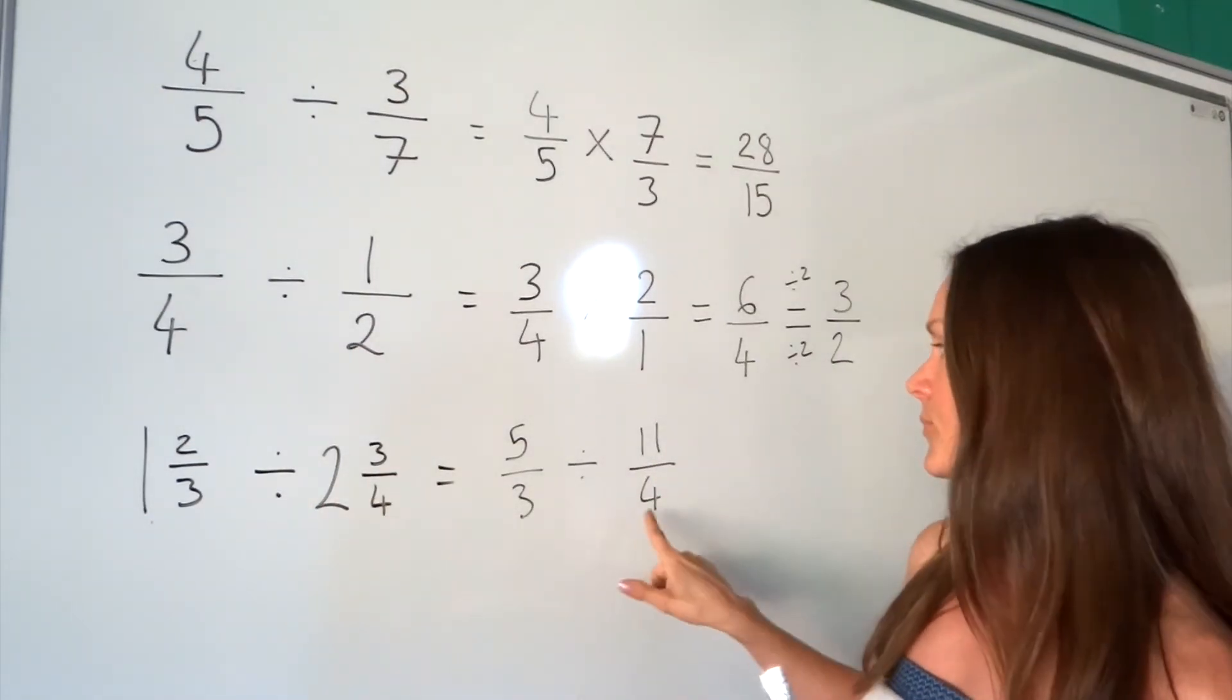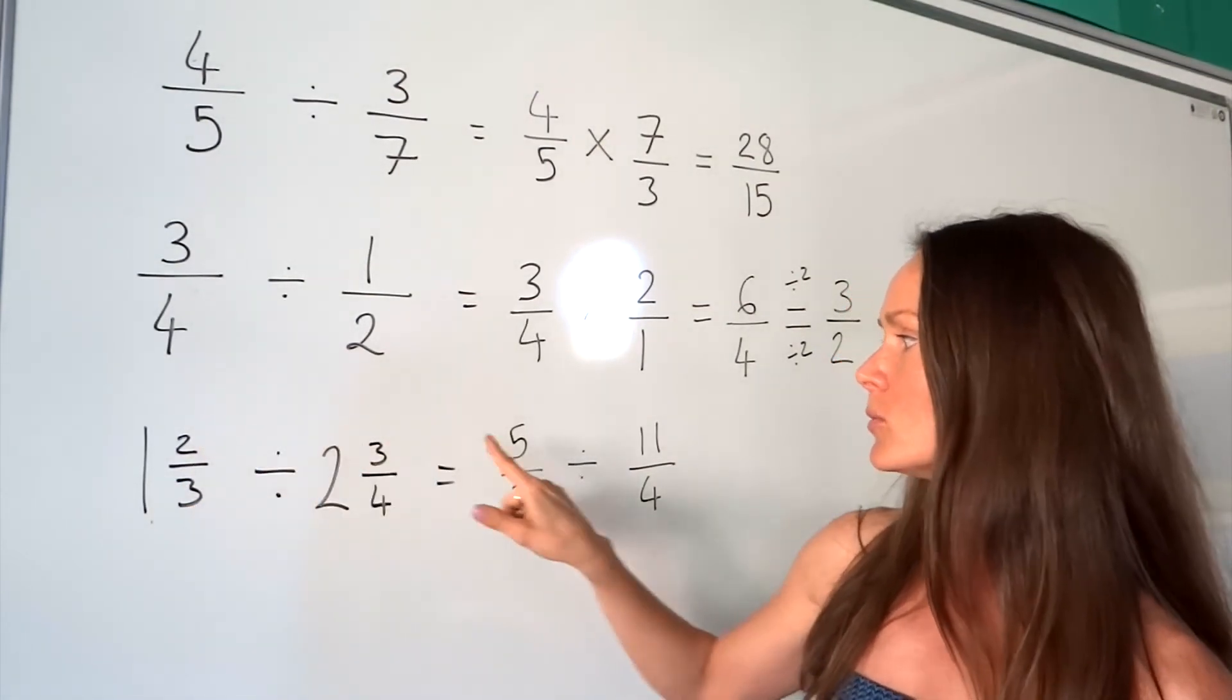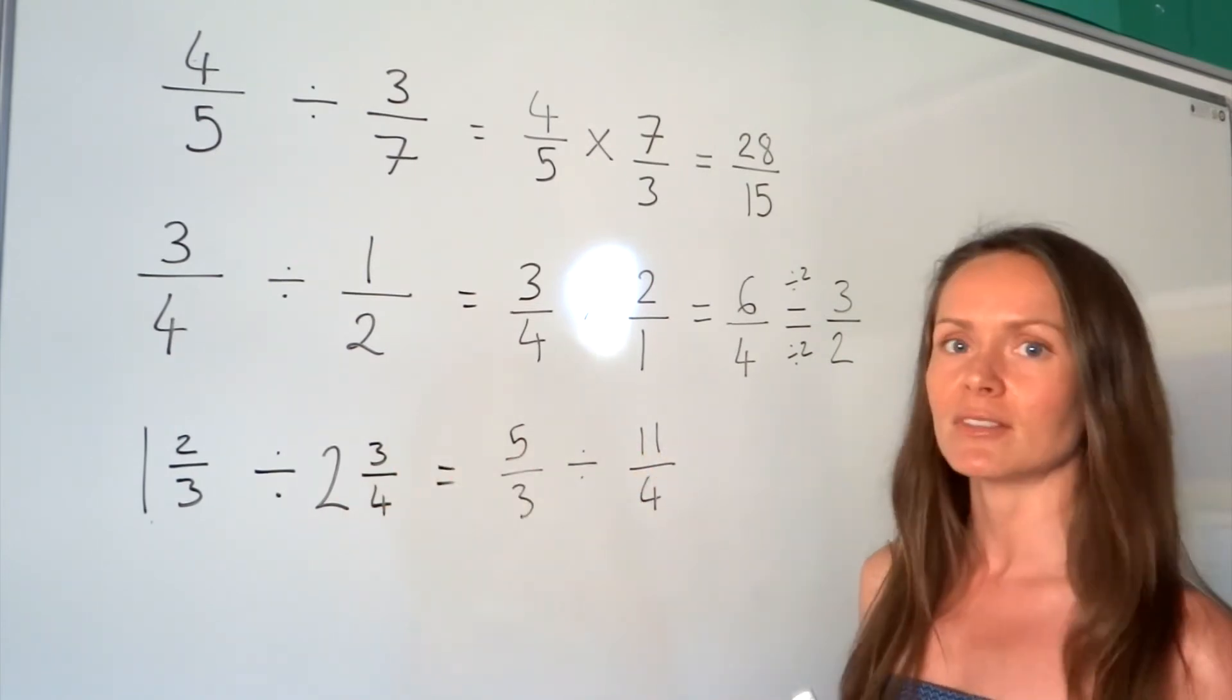the denominator stays the same. And to get the numerator, you do 1 times 3 plus 2, which gives me 5. And so for this one, 2 times 4 plus 3 gives you 11. Okay?